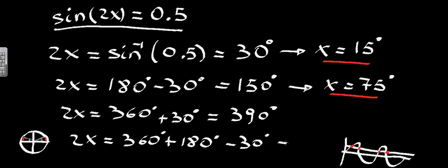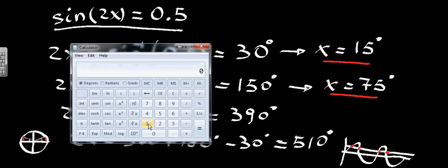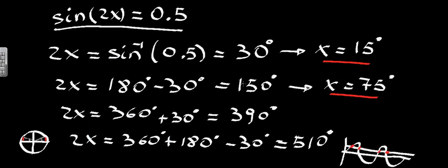Again, if we use our calculator, we can check that 15 times 2, and then calculating the sine of this is 0.5. We go 75 times 2 is 150, the sine of it is 0.5 again. 390, the sine of it is 0.5, and 510, the sine of it is also 0.5.